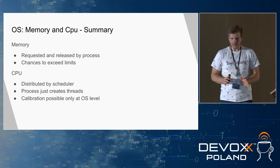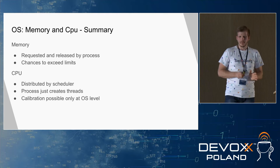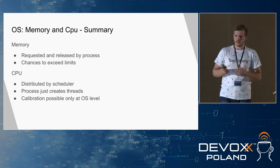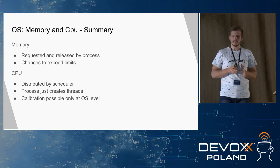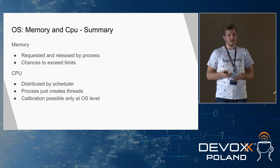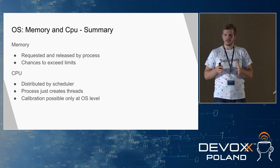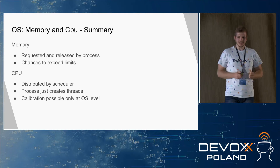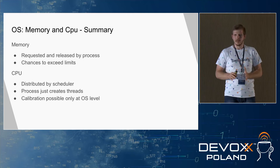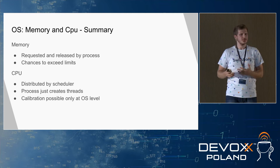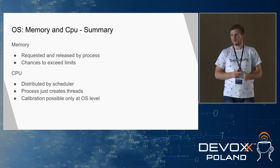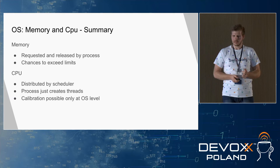Quick summary: memory is requested and released by processes — you remember malloc and free from C/C++. A process may sometimes exceed its limits by being greedy and requesting more and more memory. On the other hand, CPU is outside the process scope — the process has computation, but it's the scheduler that gives CPU time and takes it back. So the only possible calibration of how much CPU is given to a process is done at the operating system level, not from the process level.